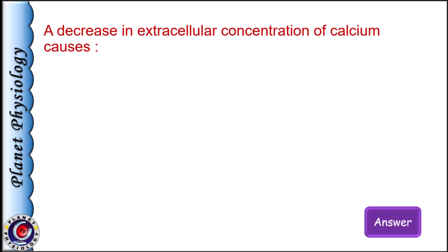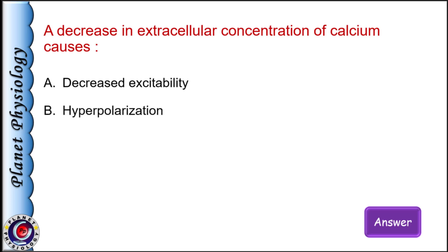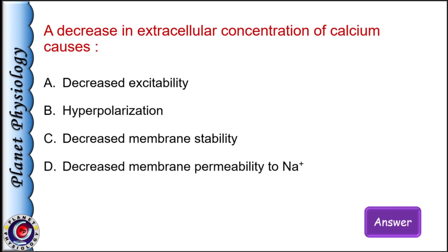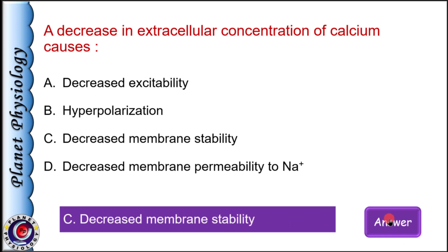A decrease in extracellular concentration of calcium causes: a) decreased excitability, b) hyperpolarization, c) decreased membrane stability, and d) decreased membrane permeability to sodium. The correct answer is option C: decreased membrane stability. Calcium ions are called membrane stabilizers — they keep voltage-gated sodium channels in an inactivated state, preventing unnecessary stimulation of excitable tissues. In hypocalcemia, voltage-gated sodium channels cannot be maintained in closed state, increasing excitability of nerve fibers, leading to tetany, also called hypocalcemic tetany.